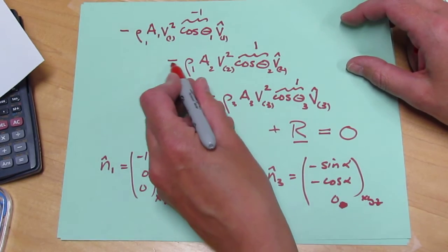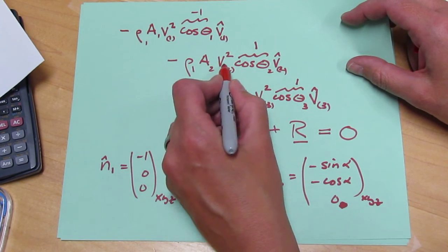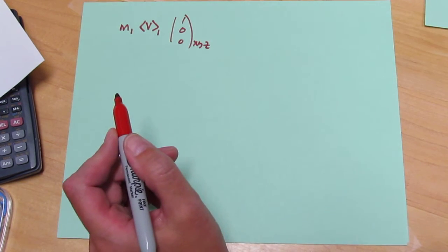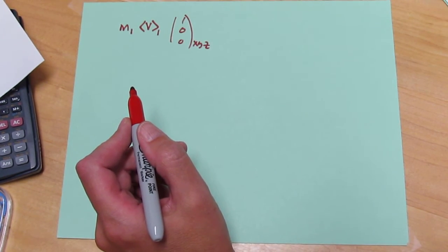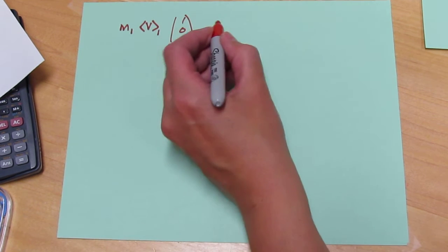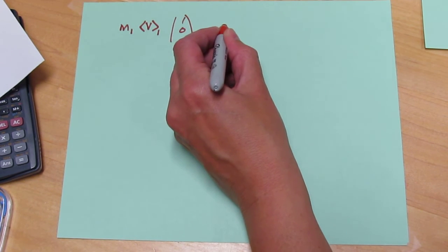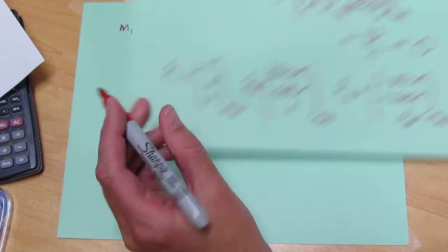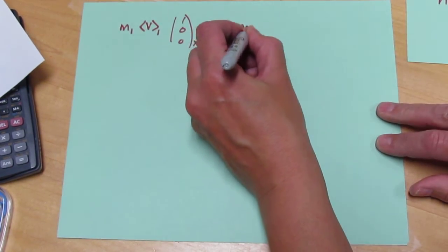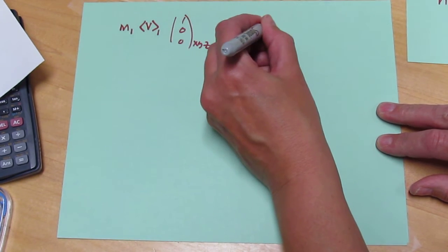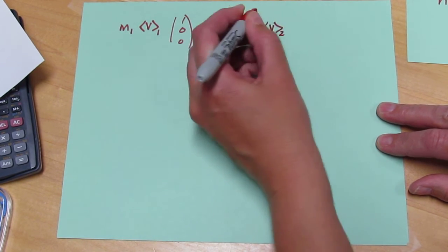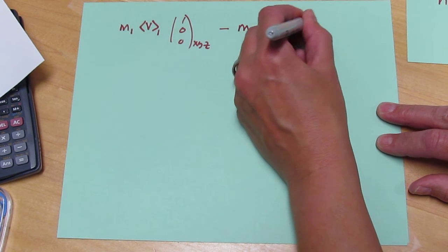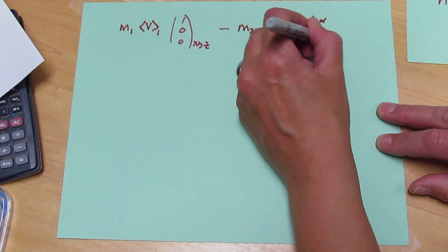Plus this term, which is minus M2 times V times V hat 2. V hat 2 is equal to N2. So we have plus, plus a minus M2 V at 2 times the unit vector N2, which is sine alpha cos alpha 0.